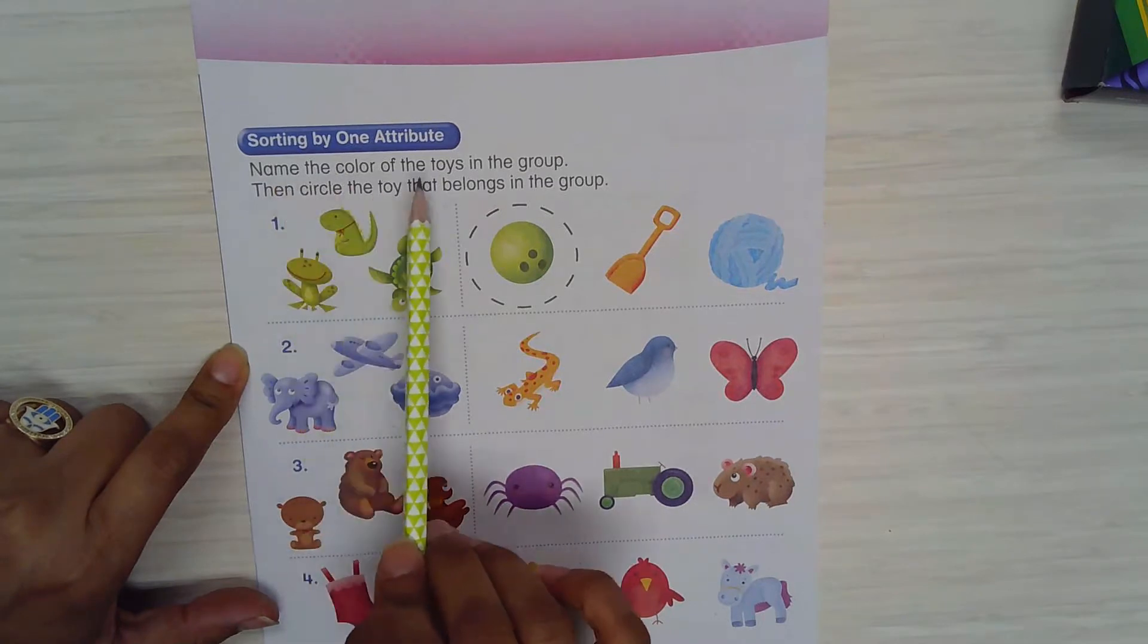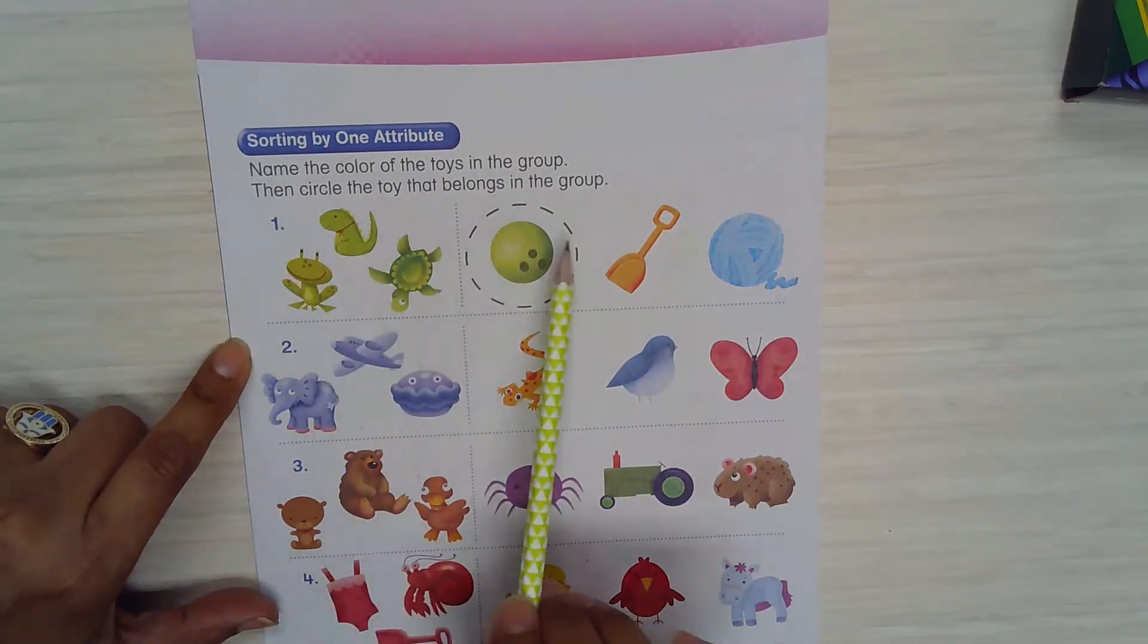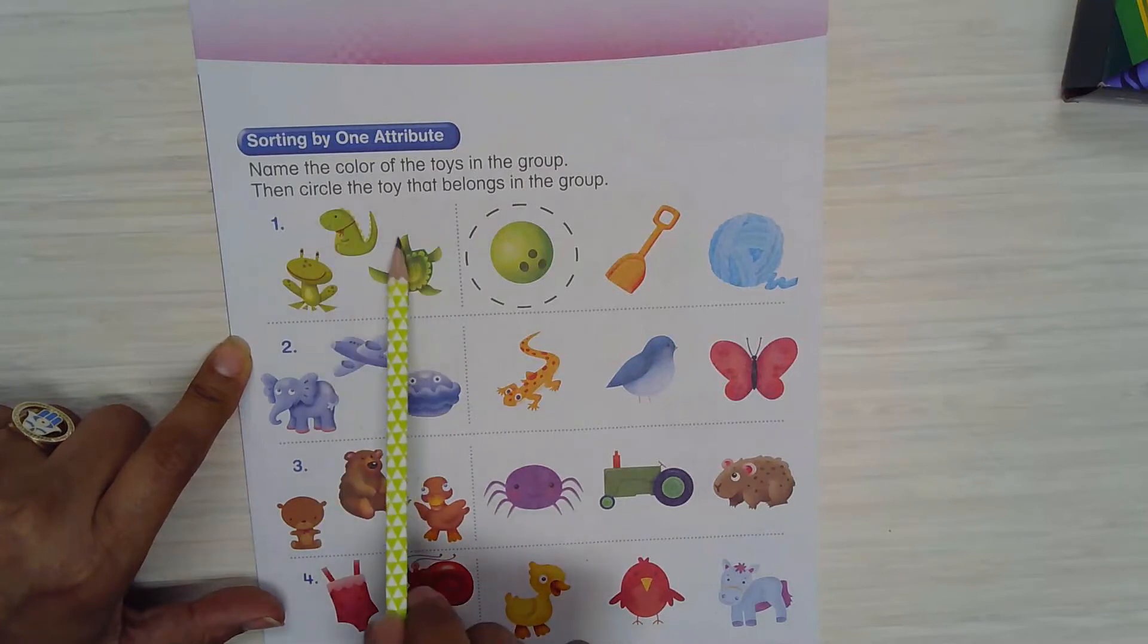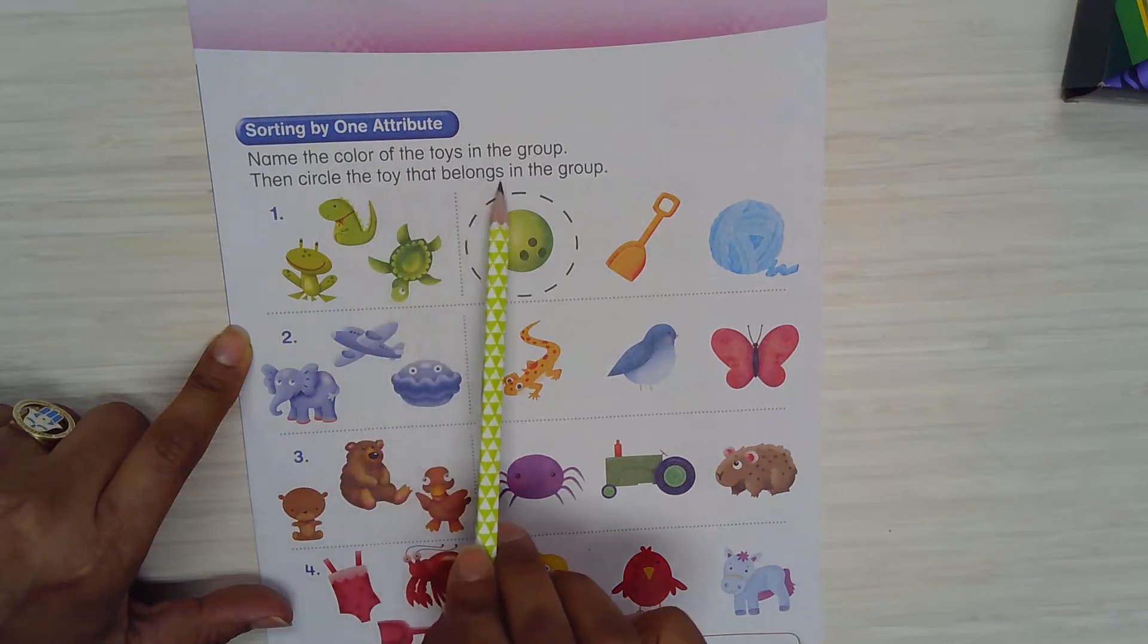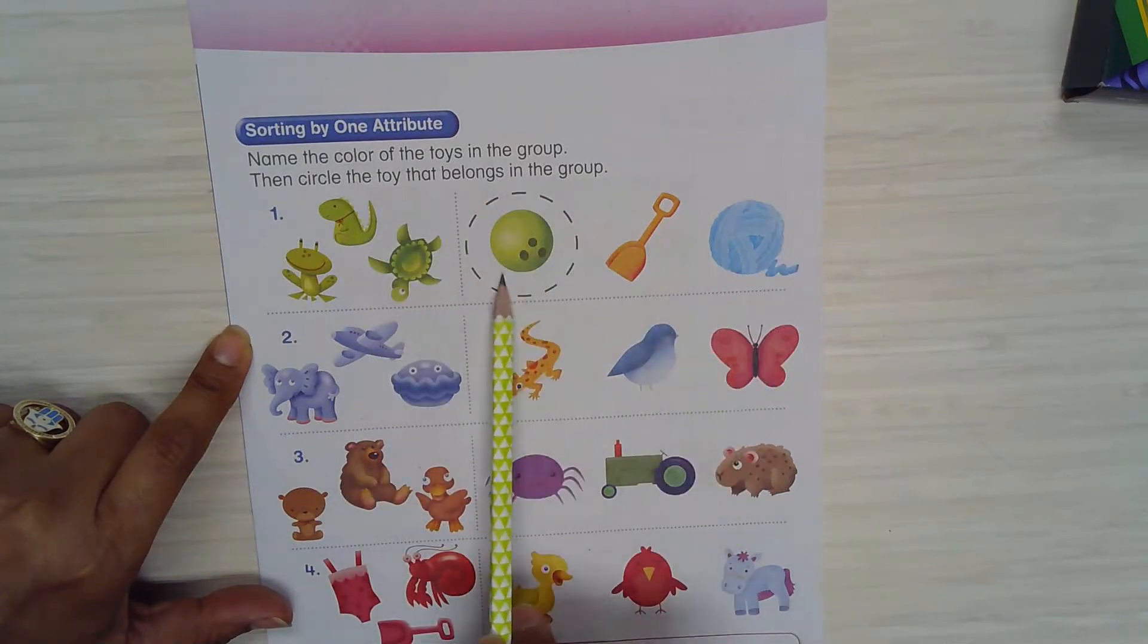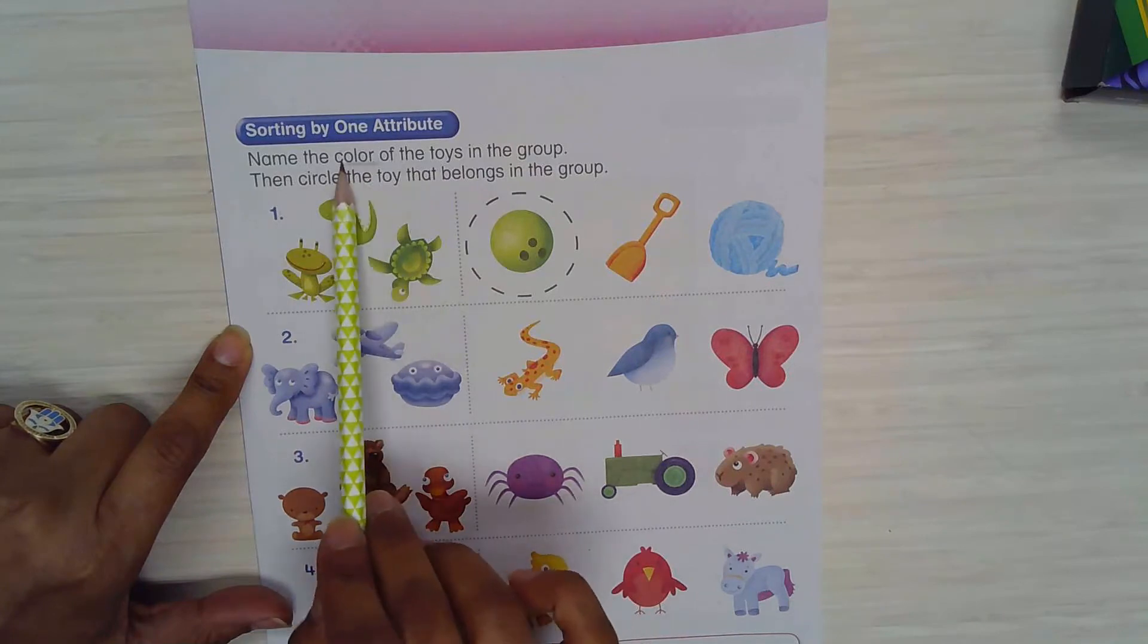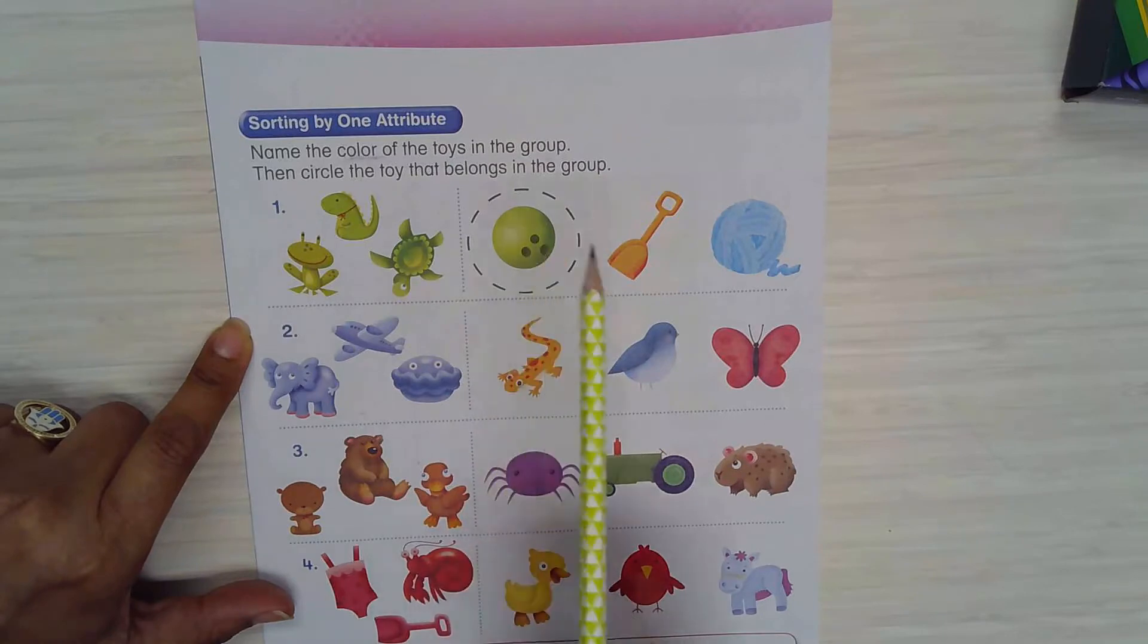Name the color of the toys in the group. This is a group, so what's the color? Green. Second part, then circle the toy that belongs in the group. So as you see, I have lots of toys here, but I'm looking for only green toy because I'm sorting by colors. So first one green, I saw the bowling ball green, so I'm circling the bowling ball.